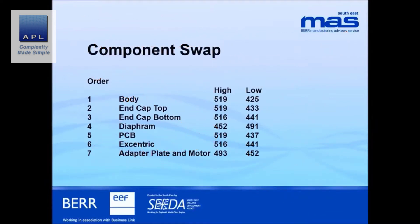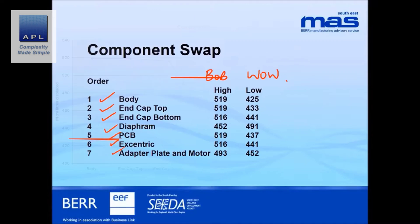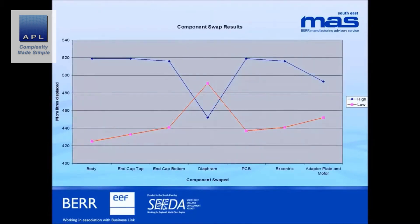Here are the results. You can see the seven parts that got swapped out: the body, the two end caps, the diaphragm, the PCB, the eccentrics, and the adapter plate. Here's BOB, here's WOW. To make this more visual and easy to see, we put it on a graph. BOB and WOW are samples from either end of the distribution — the best of the best up here, the worst of the worst down here.